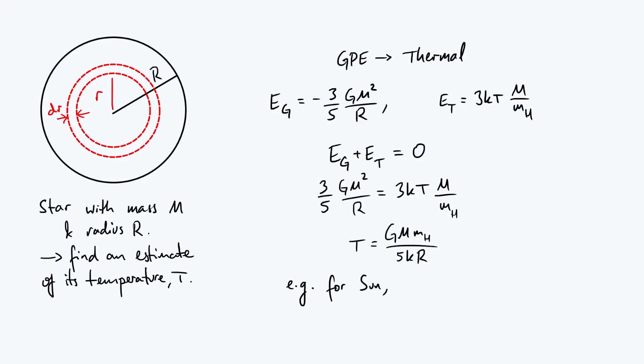So of course, to finish off, we want to check how good this estimate of the temperature actually is. So if we plug in the stellar parameters for the sun, the mass of the sun and the radius of the sun, we find that the estimate of the temperature is about five times 10 to the power of six Kelvin. Now, this is actually really good when you consider that the actual core temperature in the sun is about 10 to the seven Kelvin.